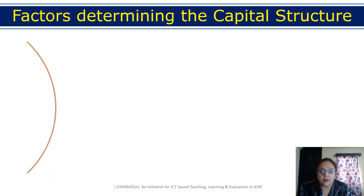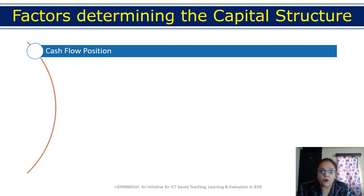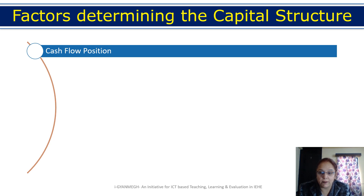The first factor determining capital structure is the cash flow position — meaning cash inflow and cash outflow. Cash flow position covers operating activities, which show how much money you earn day-to-day; investing activities, showing returns from investments; and financing activities, showing money raised through capital. This is a key factor in deciding the capital structure.